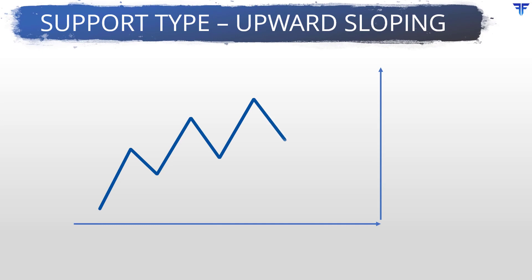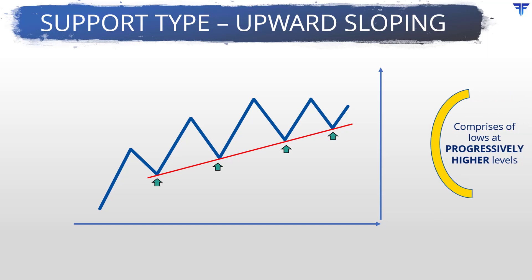Let us now look at a support that is upward sloping to the right. Look at this sample chart here. If you closely observe the unfolding pattern, you will notice that the lows are being made at progressively higher levels — the second low is above the first low, the third low is above the second low, and the fourth low is above the third low. As a result, if the lows are connected using a line, you will notice a line that is rising to the right. So, a rising support occurs when two or more lows are concentrated at progressively higher levels.